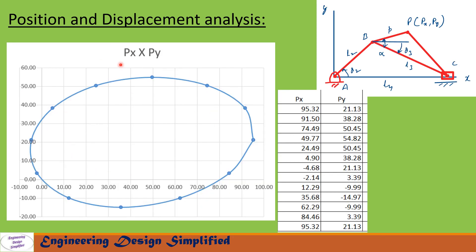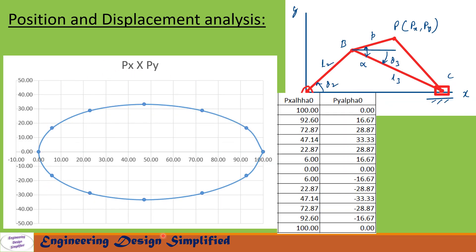In this graph we have plotted px along the horizontal axis and py along the vertical axis for alpha = 25 degrees. At 0 degrees crank angle, px is 95.32 mm and py is 21.13 mm. At 30 degrees and 60 degrees crank angle we get subsequent points. The curve starts from this first point and traces all the way through these points and back, showing how the coupler point traces as the crank rotates 360 degrees.